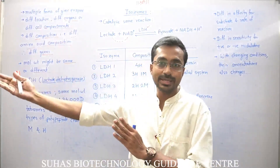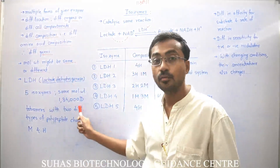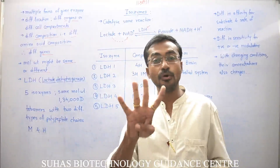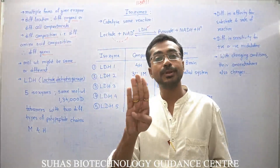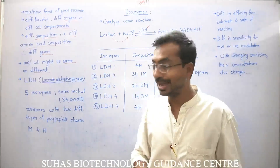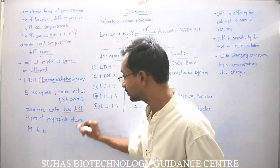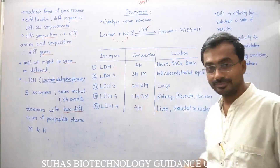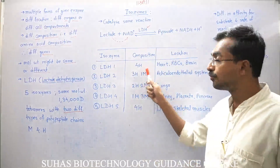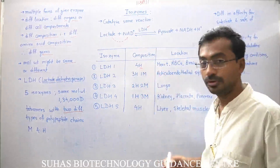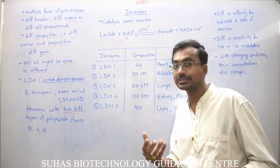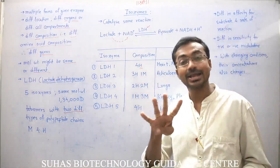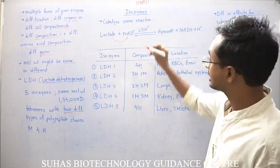All 5 isozymes of LDH have the same molecular weight of 1,34,000 Dalton. All are tetramers, meaning they are made up of 4 polypeptides. There are 2 different types of polypeptide chains observed among all LDH isozymes. LDH1 is designated 4H because it has H-type polypeptides — first discovered in heart muscles — so all 4 polypeptides are H-type.